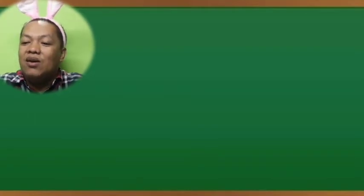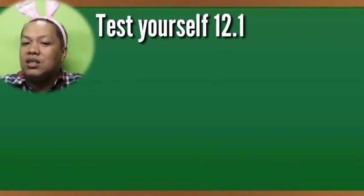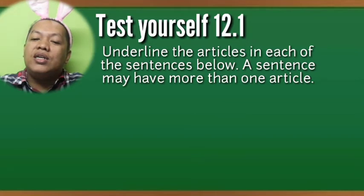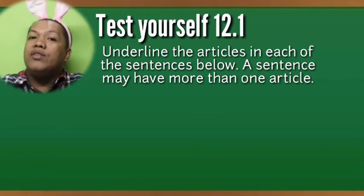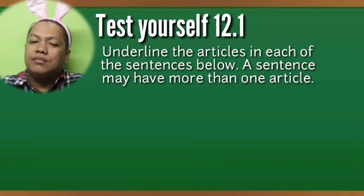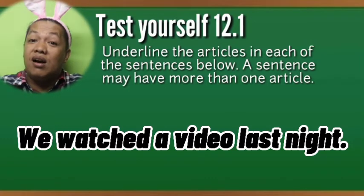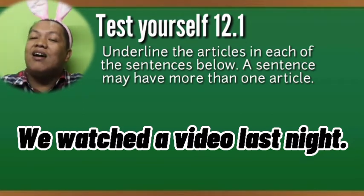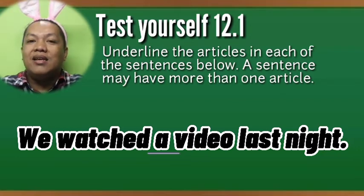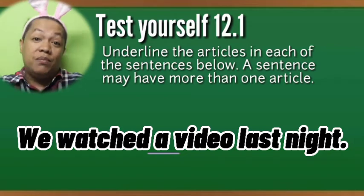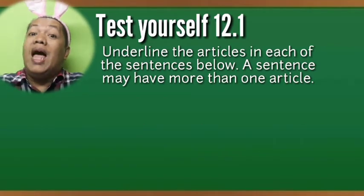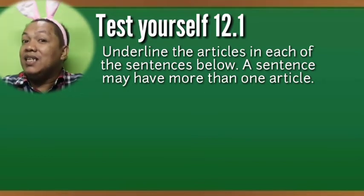Now let us test your learnings for the day via Test Yourself 12.1, which will instruct you to underline or determine the articles in each sentence given. Take note: a sentence may have more than one article. Sample sentence: 'We watched a video last night.' The article being underlined in the sentence is 'a.' Again, there can be two or more articles per sentence. Let us proceed in testing your understanding.